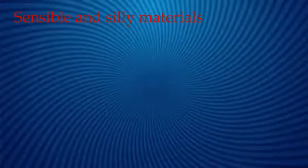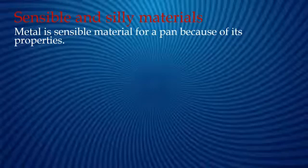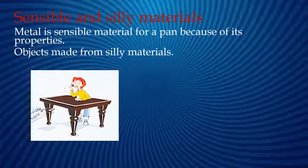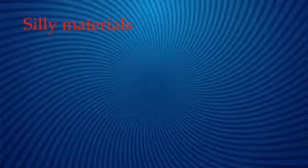Sensible and silly materials. Metal is a sensible material for a pan because of its properties. What would happen if the pan was made of wood? Here are some other objects made from silly materials: Amy medicines, chocolate table, and rubber bike. Think about it — silly materials!